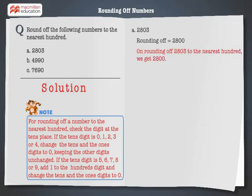Let's solve the next problem: 4,990. Here, the digit at the tens place is 9. Hence, add 1 to the hundreds digit and change the tens and the ones digit to 0.